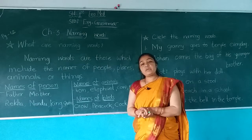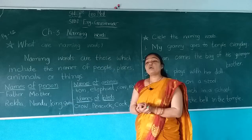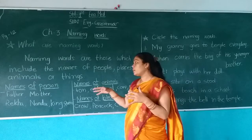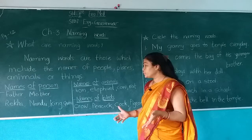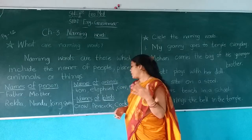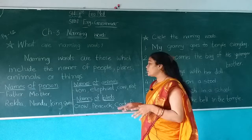Now, which names fall under 'name of a person'? The name of a person means father, mother, any name that includes a person. My name is Sima — it includes in the name of a person. Father, mother, Rekha, Nandu, king, queen — all of these include in the name of a person. Name of animals: different types of animals like lion, elephant, cow, rat, tiger, giraffe — all include in the name of animals.